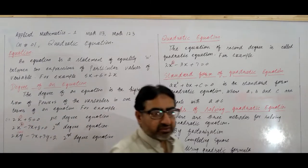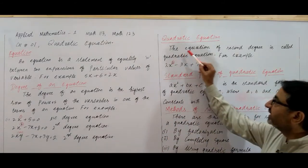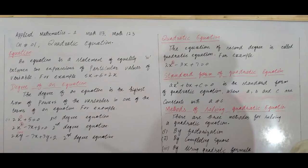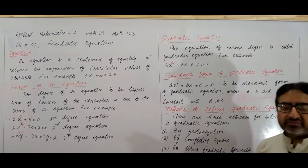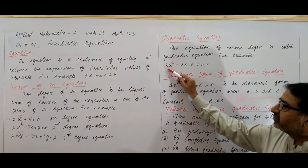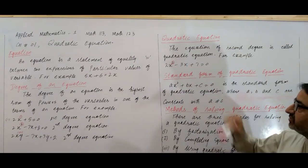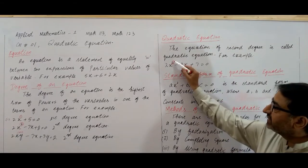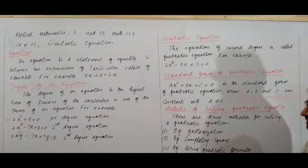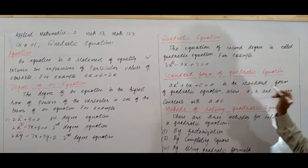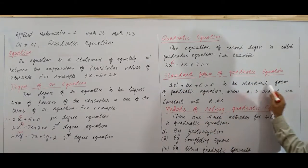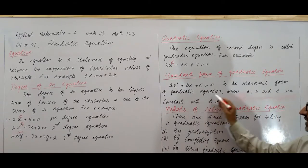What is a Quadratic Equation? A quadratic equation is an equation of second degree. Any equation whose degree is 2 is called a quadratic equation. For example, 2x² minus 3x plus 7 is equal to 0 — this equation is a quadratic equation.